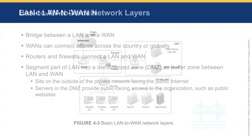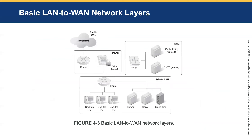The basic structure of the LAN to WAN domain includes a publicly available wide area network, along with a DMZ — the demilitarized zone — which allows for segmentation and acts as a buffer. The DMZ sits outside of the private network but faces the public internet, while the private LAN contains the workstations, servers, and routers that connect to the public wide area network.